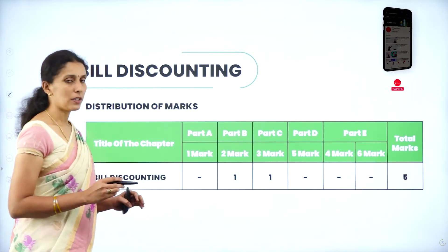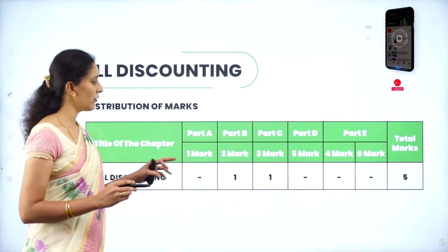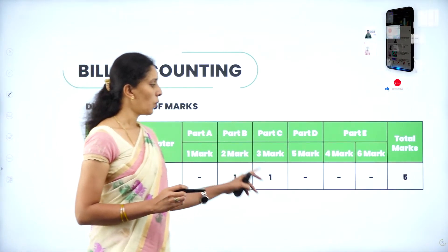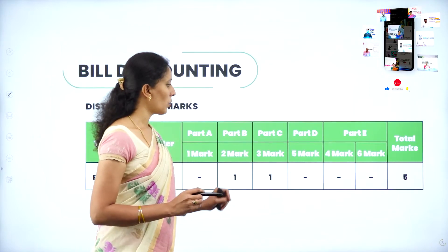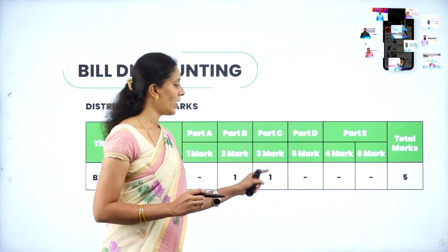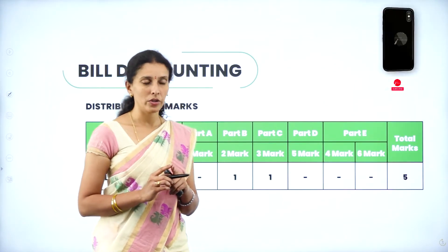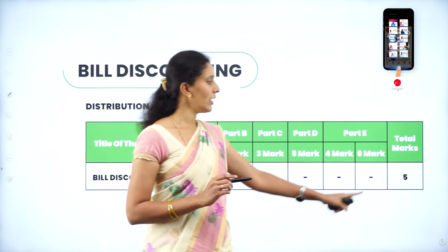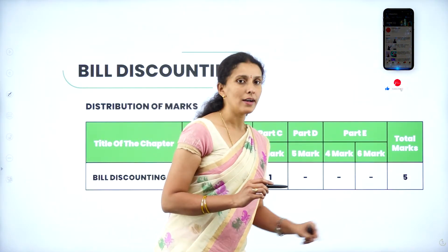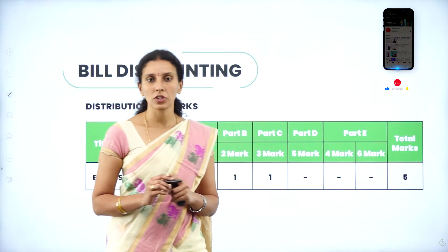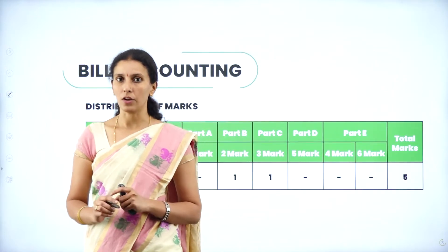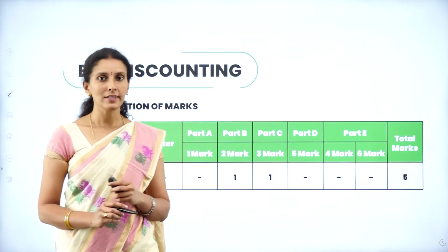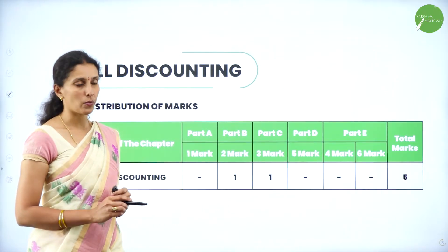From the chapter Bill Discounting, you will be having 1 two-mark question and 1 three-mark question — totally 5 marks from the chapter Bill Discounting. So let us see the 2-mark questions.